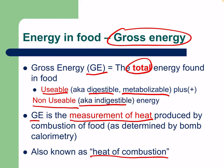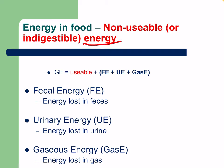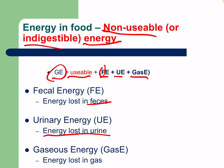The non-usable or indigestible energy has several components. Gross energy equals usable energy plus fecal energy, urinary energy, and gaseous energy. Fecal energy is energy lost in feces; urinary energy is energy lost in urine; gaseous energy is energy lost as gas. So: GE = metabolizable energy + fecal energy + urinary energy + gaseous energy.